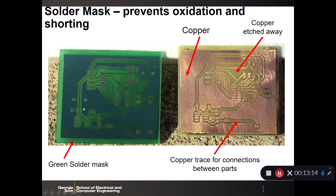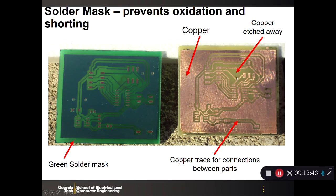The solder mask is that green layer — sometimes red or blue — and it serves two purposes: it prevents oxidation of the copper, and it prevents shorting between different traces where you'll mount components. Where the solder mask sits over an existing copper trace it appears darker, and where the copper has been etched away the solder mask appears a slightly different shade. Once you apply the solder mask, you get the finished colored surface on the left-hand side.